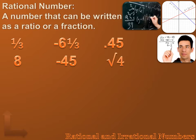And the square root of four, well, that could be simplified to two. And two could be written as two over one. So the square root of four is a rational number.